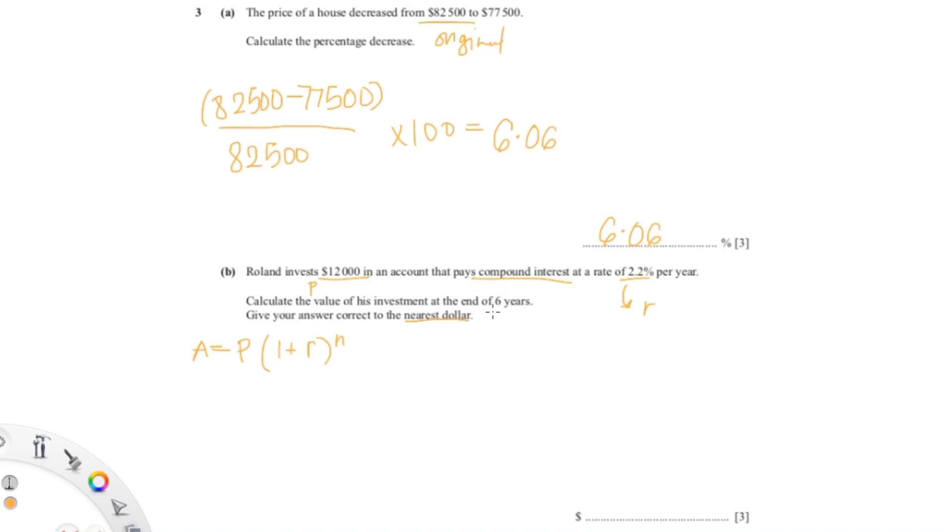And then we just put in all the values into the formula, which is 12,000 times one plus 2.2 percent... power six, which is 12,000 times one plus 0.022 to the power six. And you just put that in your calculator.